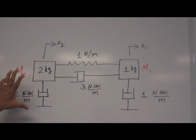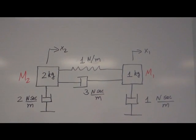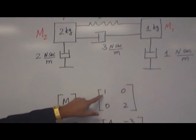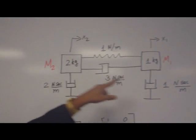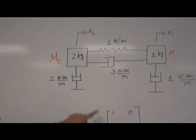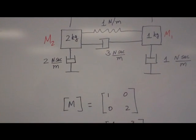So by looking at it, you can write the mass matrix. M11 is 1, M22 is 2. Because the values are given, 1 kilogram and 2 kilograms. And it's diagonal matrix as per rule 1.